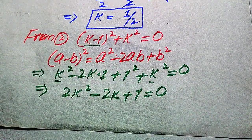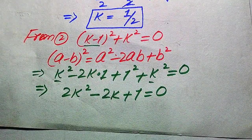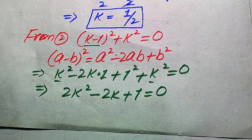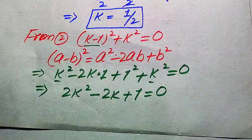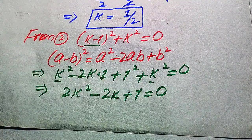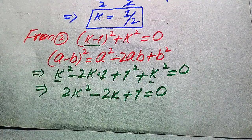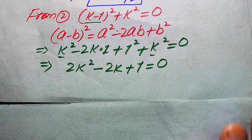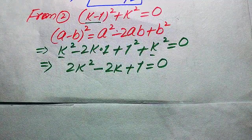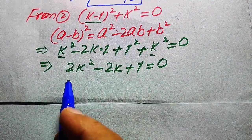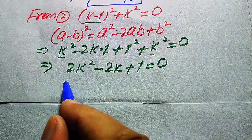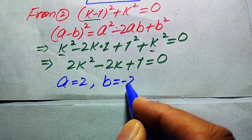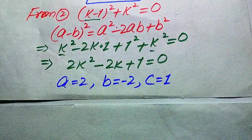This is a quadratic equation in k. There are three methods to solve a quadratic: factorization, the quadratic formula, or completing the square. Here we use the quadratic formula. The coefficients are a equals 2, b equals minus 2, and c equals plus 1.